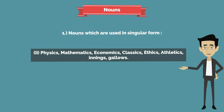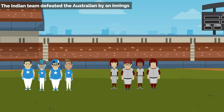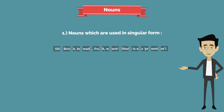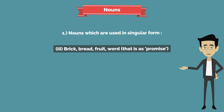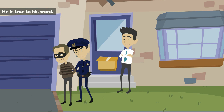Examples: 'Economics is a very interesting subject.' 'The Indian team defeated the Australian by an innings.' Third group: brick, bread, fruit, word — used in singular form. Example: 'Let me buy some fruit.' 'He is true to his word.'